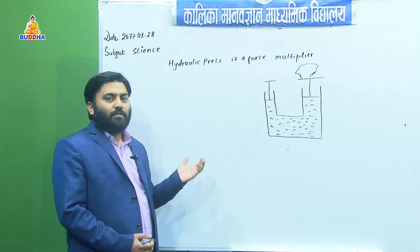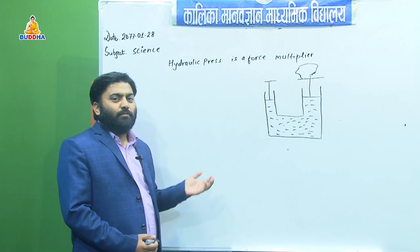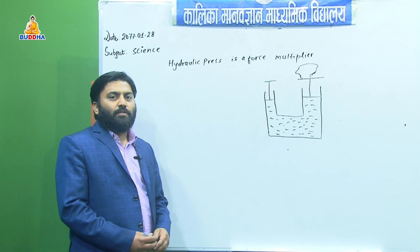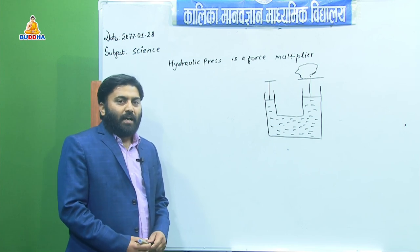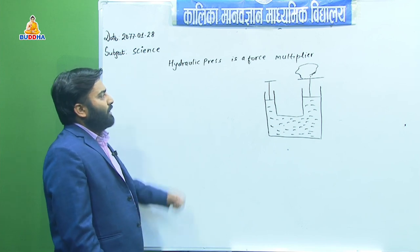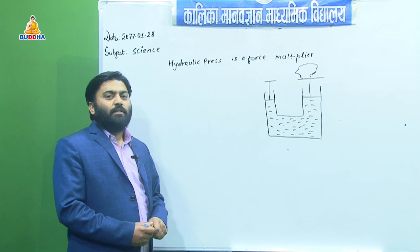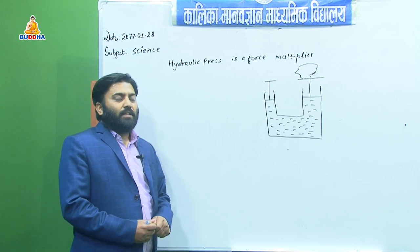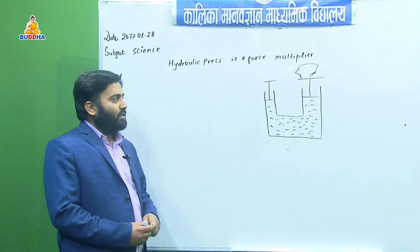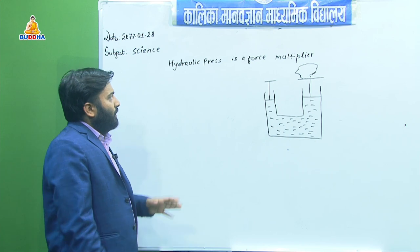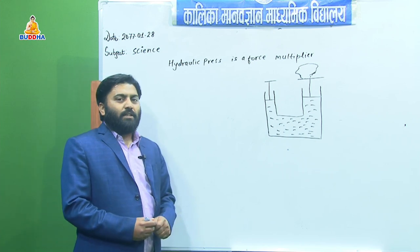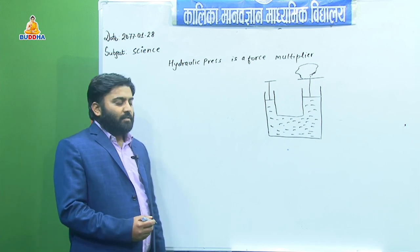The question is, what does the equation mean, and what is the problem here? The first step is the hydraulic process — the force multiplier — and the equation is the problem. So how do we prove this? Let us see here. To prove that a hydraulic press is a force multiplier, we take the help of Pascal's law.